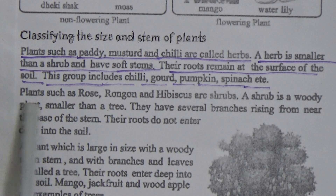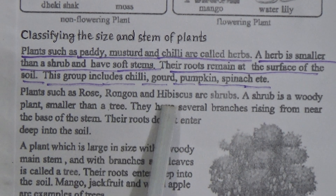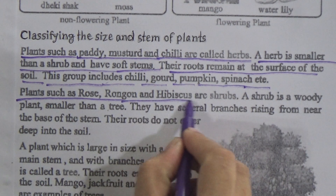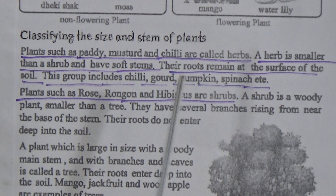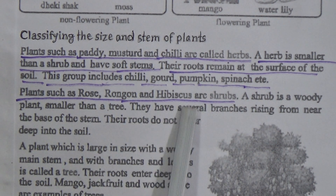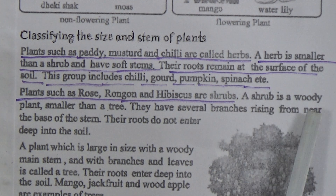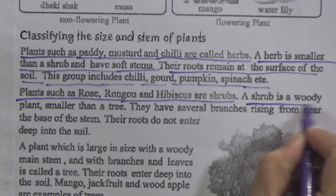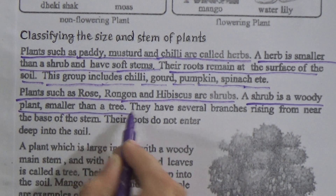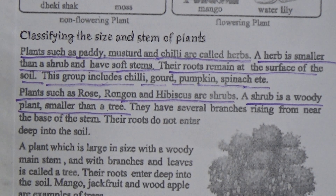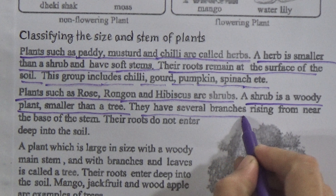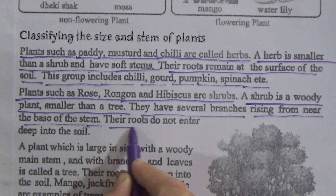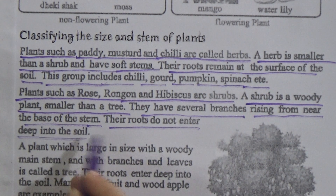Plants such as rose, rongon and hibiscus are shrubs. This is also an example of shrubs. A shrub is a woody plant smaller than a tree. They have several branches rising from near the base of the stem, and their roots do not enter deep into the soil.